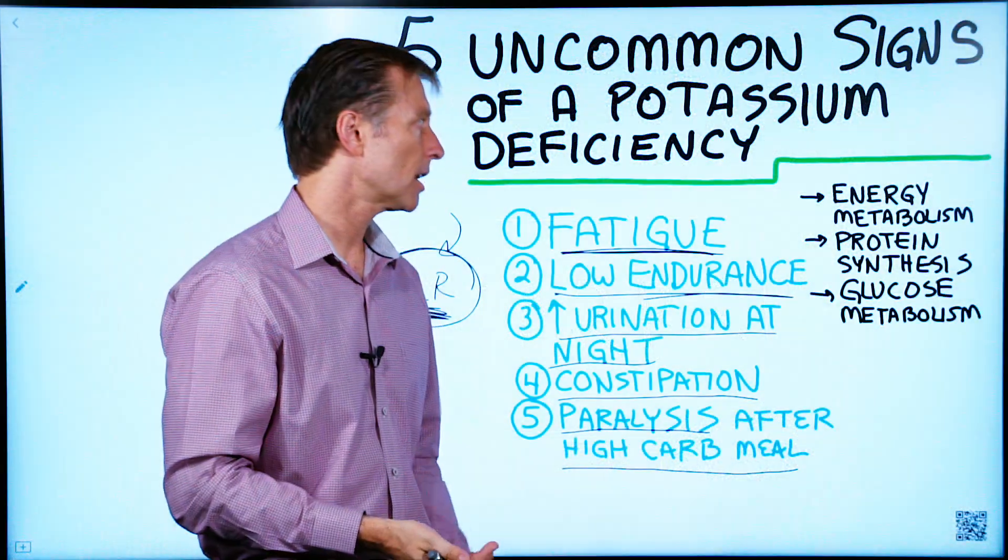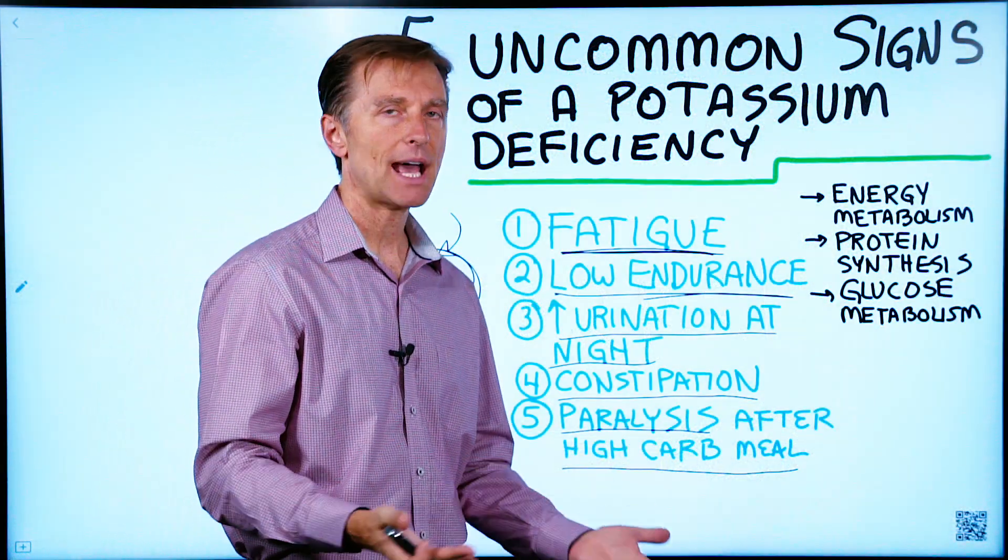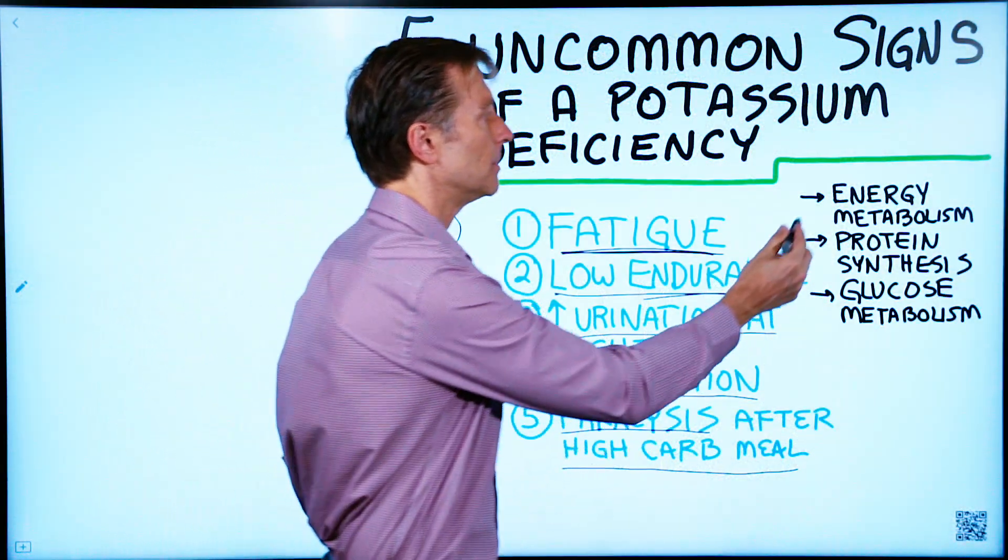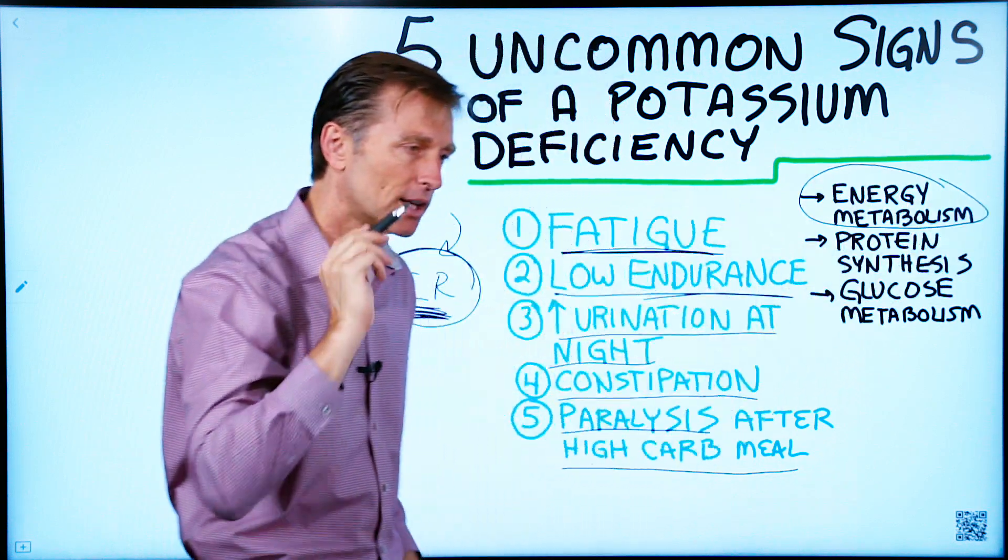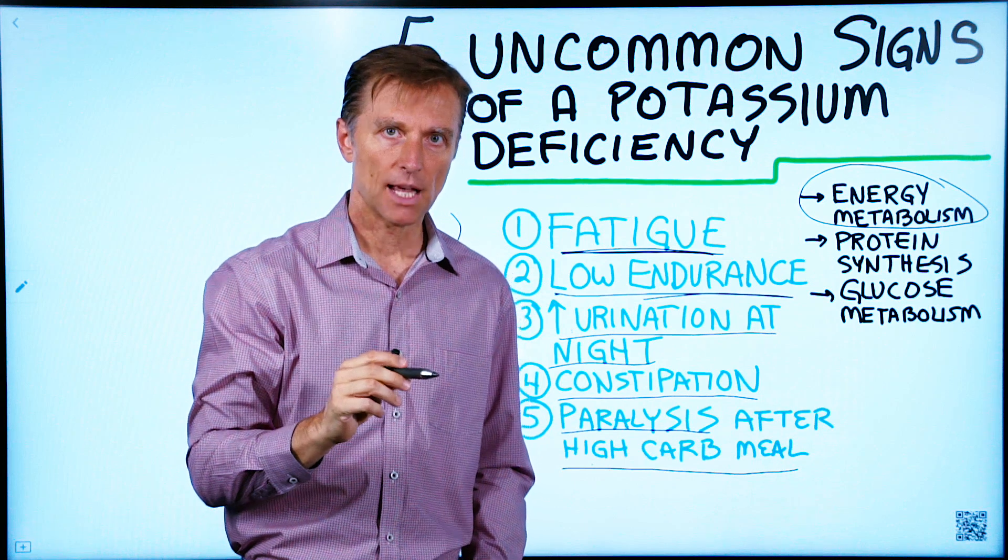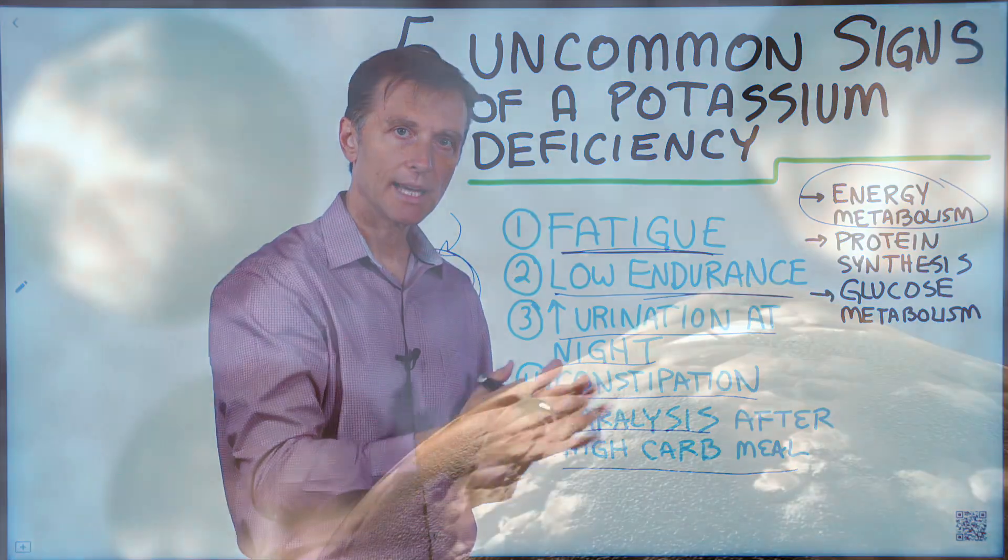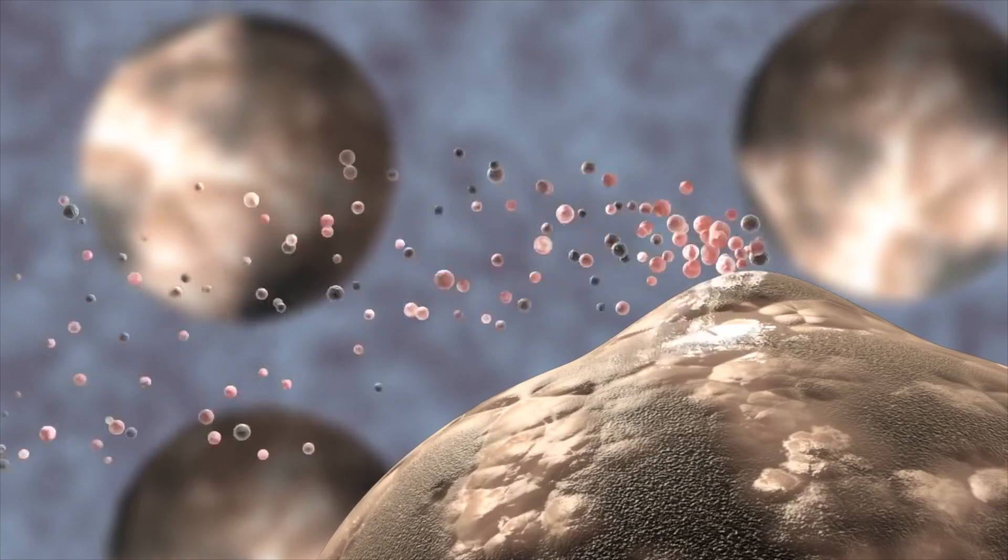When you consume a lot of carbohydrates, your need for potassium goes way up because potassium is involved in not just energy metabolism, but glucose metabolism as well. And you have the shift of this electrolyte out of the muscle cell, getting a temporary paralysis.